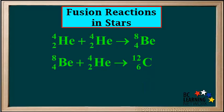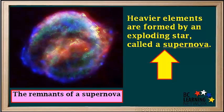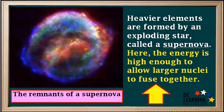These kind of fusion reactions in stars account for the formation of many of the lighter elements. Heavier elements are formed by an exploding star called a supernova. Only in these is the energy high enough to allow the larger nuclei, with their high number of repelling protons, to overcome the repulsive forces and fuse together. All of the heavier elements on Earth are thought to have come from one or more ancient supernova explosions somewhere in our galaxy.